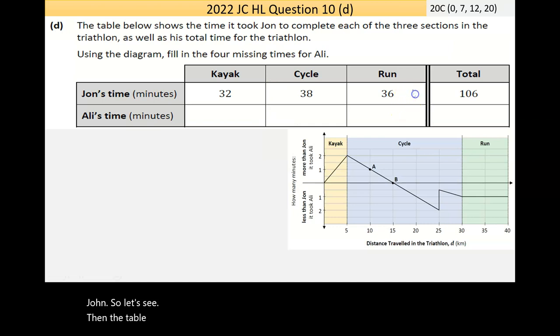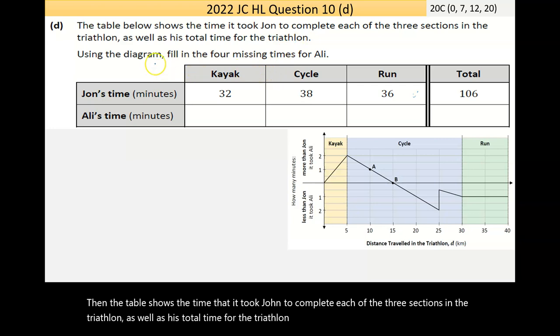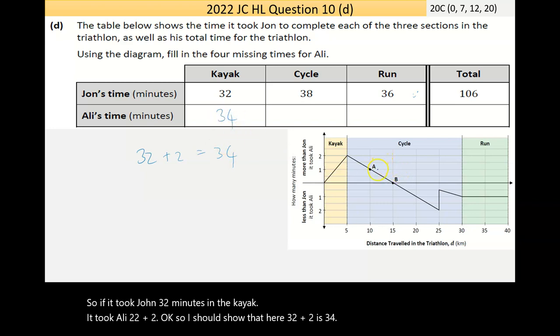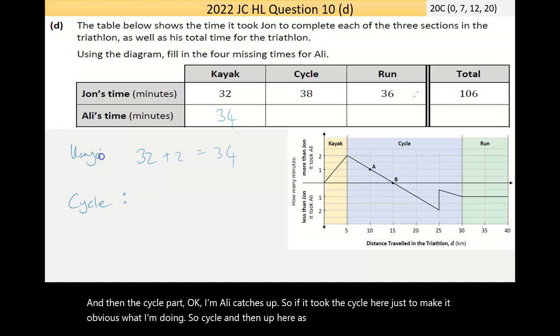Then the table shows the time that it took John to complete each of the three sections in the triathlon, as well as his total time for the triathlon. Use the diagram, fill in the four missing times for Ali. So if it took John 32 minutes in the kayak, it took Ali 32 plus two. So I should show that here. 32 plus two is 34.